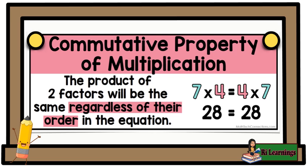Example: let's multiply 7 by 4. 7 times 4 equals 28. Now, reversing the order of multiplication, we get 4 times 7 equals 28. The answer is the same even after changing the order of the numbers. Thus, the multiplication is commutative.